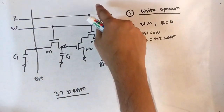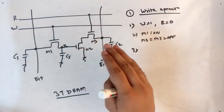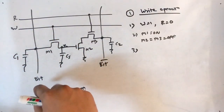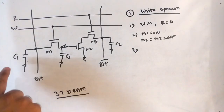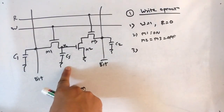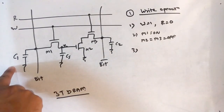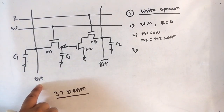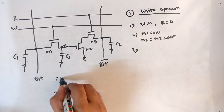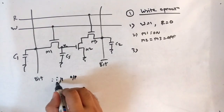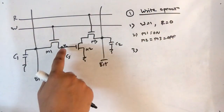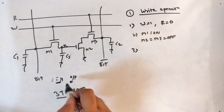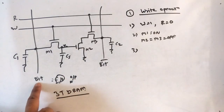Since M2 and M3 are off, that area is gone. We now focus on the remaining area, which contains only the bit line, the pre-charge capacitor C1, and the storage capacitor CS. C1 is pre-charged to VDD. Since we are doing a write operation, the bit line acts as the input line — we are placing here a 1 or a 0.